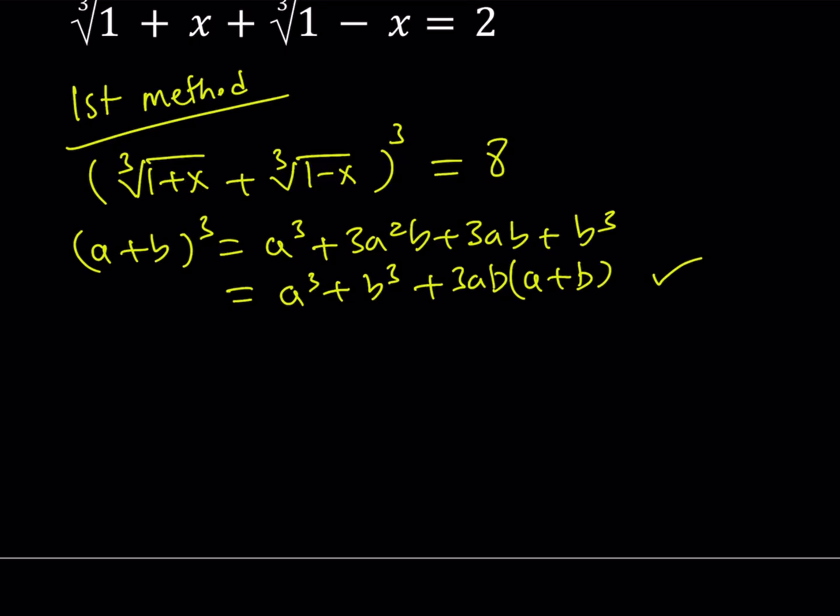So, I'm going to cube the first term, which is 1 plus x. I'm going to cube the second term, which is 1 minus x. And then plus 3 times the first term without cubing, times the second term, multiply by the sum of the terms.